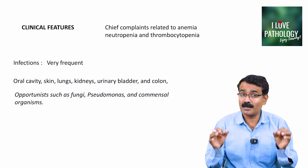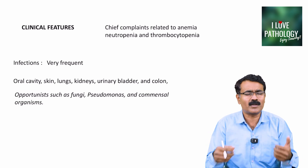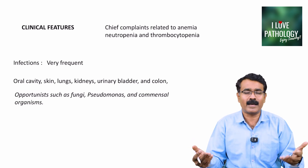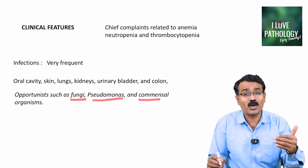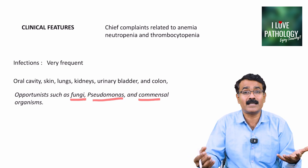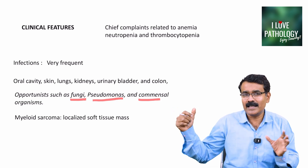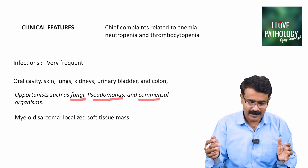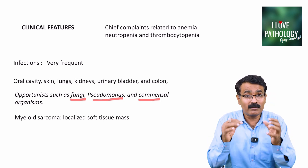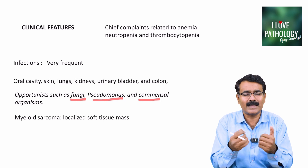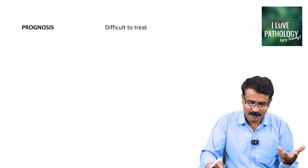Opportunistic infections are common — organisms that are normally commensals can flare up due to neutropenia, causing infections with fungi, Pseudomonas, and other organisms. Infection sites include the oral cavity, skin, lungs, kidneys, and urinary bladder — almost all organs can be involved. The third category, myeloid sarcoma, is essentially a localized soft tissue mass, but it can progress to systemic manifestation in the form of acute myeloid leukemia.